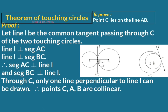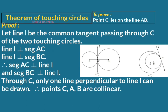Since line AC and line BC are the same, line AC, line BC, and line AB are all the same line. This means points A, C, and B lie on the same line — points A, C, and B are collinear. Hence point C lies on line AB. In this way we have proved the theorem of touching circles.